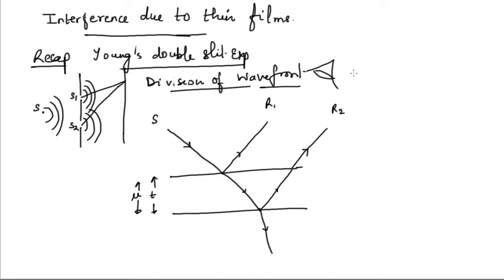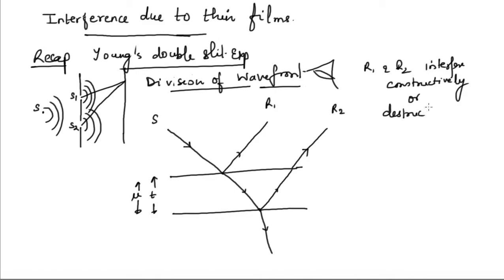These two rays r1 and r2 will interfere — either constructively or destructively. Now, in thin film interference, just as in Young's double-slit experiment, two sources are derived from a single source, meaning both are coherent sources.